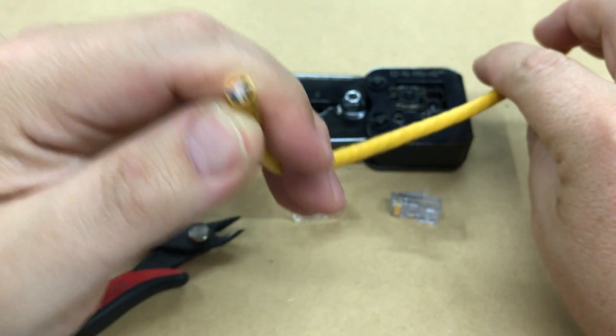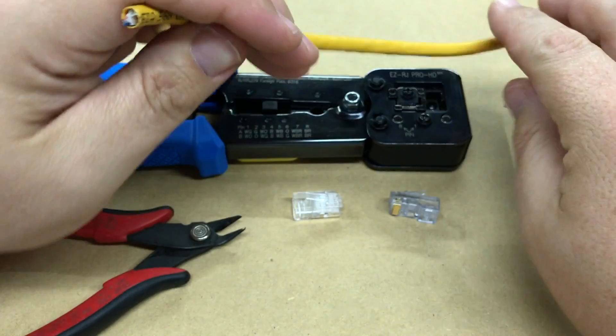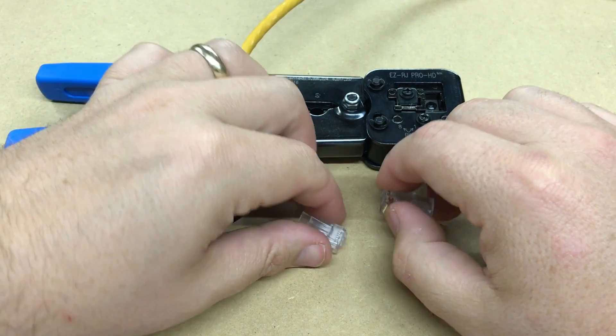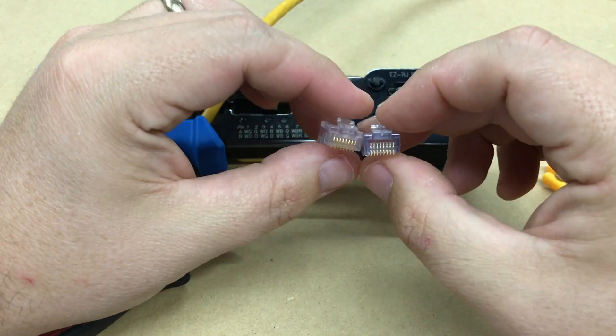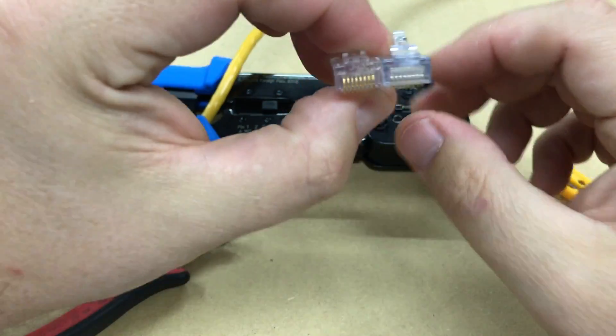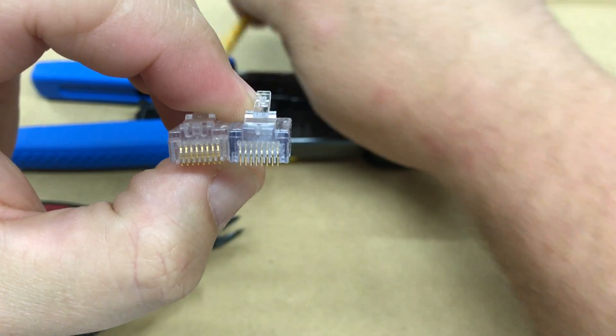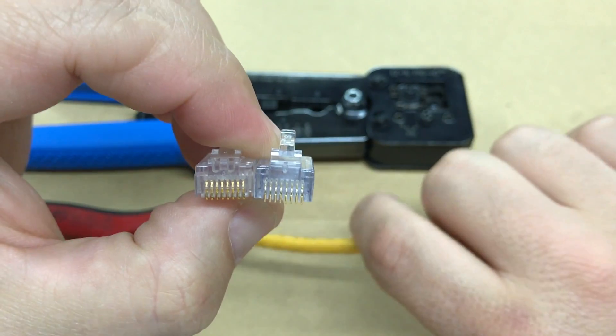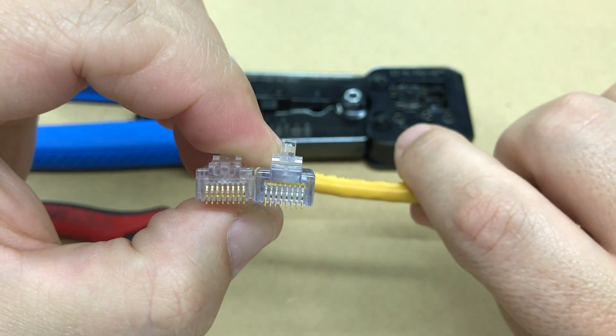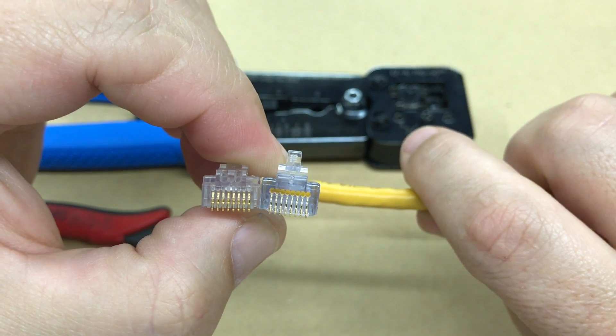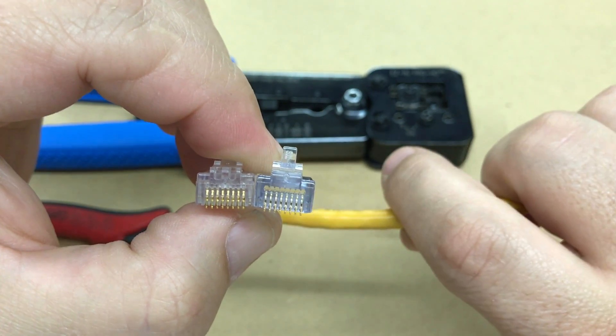I've got two different types of connectors here. So the one on the right, you might notice, is a little bit different. You can actually see through it - it's completely open on the front there.